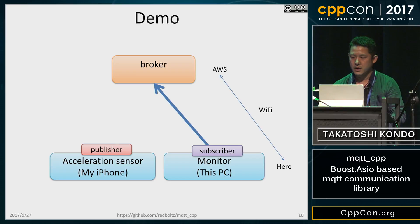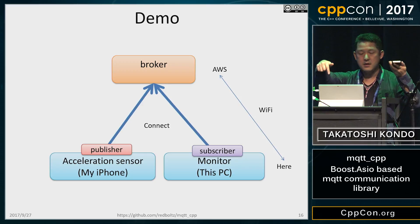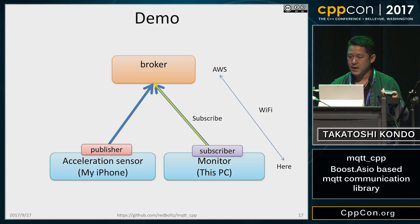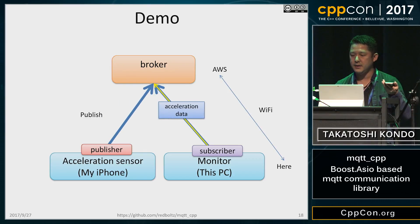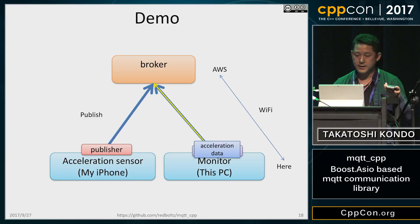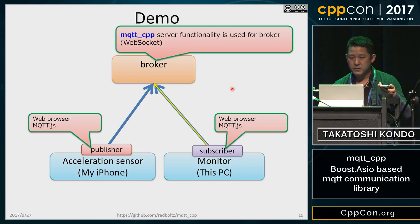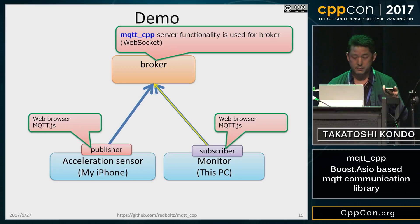Let me show you a simple demo. My iPhone becomes an acceleration sensor, and my PC becomes a monitor. Both connect to the broker on AWS EC2. The monitor subscribes to the topic for acceleration data. Then the acceleration sensor publishes the data to the broker. The data format is MessagePack. The broker uses the MQTT server, and both sensor and monitor are web-based for the demo. I use MQTT.js to connect to the broker.